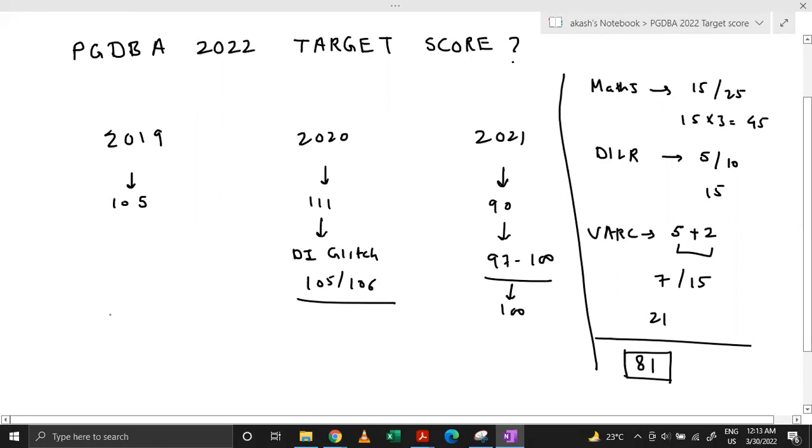So what should you do? You should analyze the paper in this manner. Count the number of easy questions over there. Let's say you are solving the paper. Keep on counting the number of very easy questions. You can definitely identify an easy question or a difficult question. So let's say you got 13 easy questions over there. You got 5 in DILR and you got, let's say, just 5 questions in VARC. So you can have a comparison with respect to 2021 paper. Here you had 15, 5 and 7. Now you got, let's say, 13, 5 and 5.